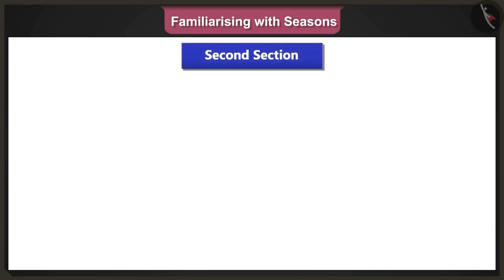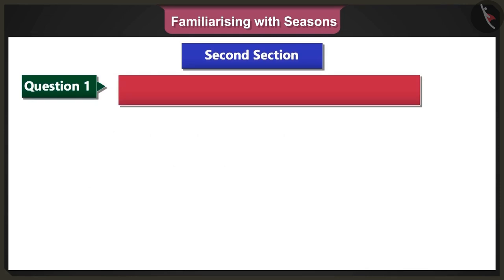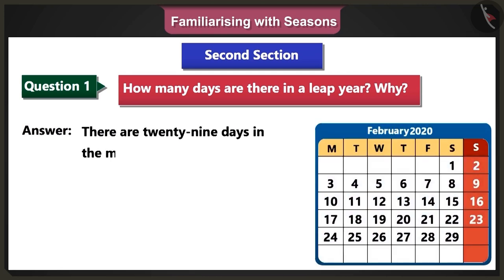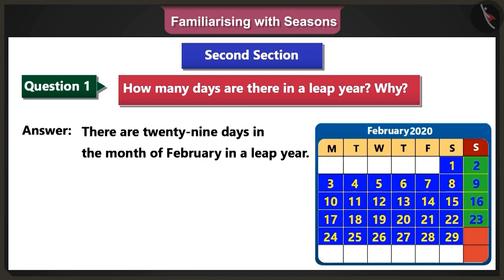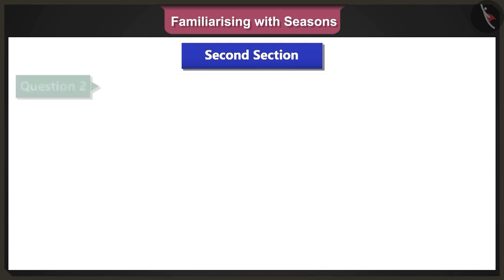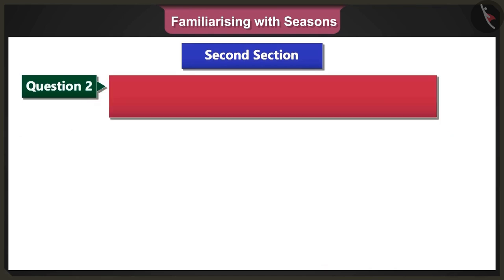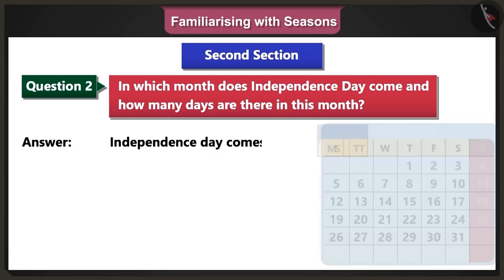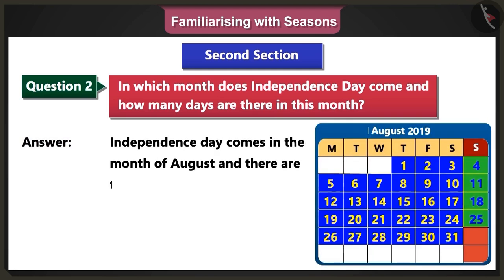First question of the second section: how many days are there in a leap year and why? Answer: there are 29 days in the month of February in a leap year, hence there are 366 days in this year. Second question: in which month does Independence Day come and how many days are there in this month? Answer: Independence Day comes in the month of August and there are 31 days in this month.